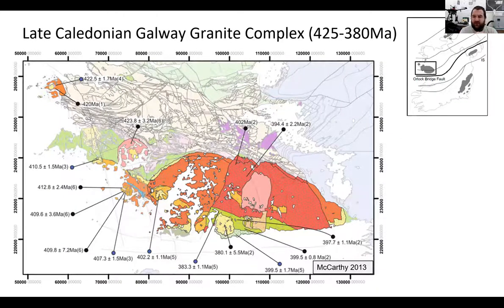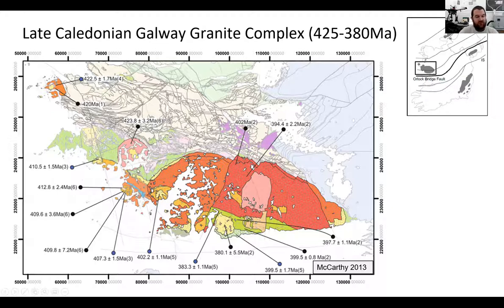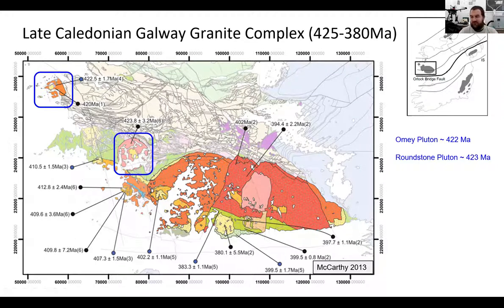This is a map of Connemara, located in the middle part of Ireland on the west coast. It's one of the largest Caledonian complexes in Britain and Ireland by square kilometres. It's composed of a central large batholith called the Kilcuren Batholith, and then several smaller intrusions: the Carna Pluton to the west of the main batholith, the Roundstone intrusion, and the Omi intrusion to the northwest. We did some geochronology on this, combined with existing geochronology from Martin Feely and Quentin Crowley.